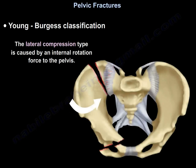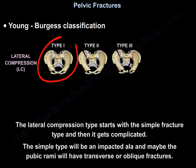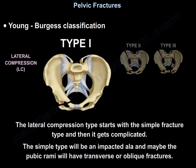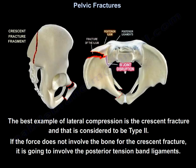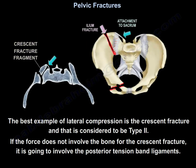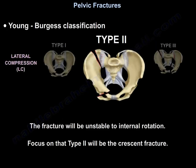Lateral compression is an internal rotation force to the pelvis. It starts simple and gets complicated, with an impacted ilium and the pubic rami may have transverse or oblique fractures. The best example of lateral compression is the crescent fracture, which is considered type 2. If the force does not involve the bone, the crescent fracture will involve the posterior tension band ligaments. The fracture will be unstable to internal rotation.